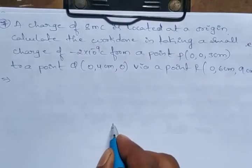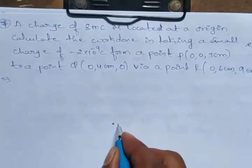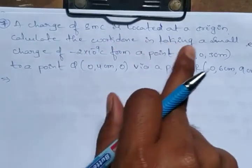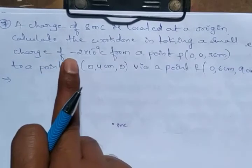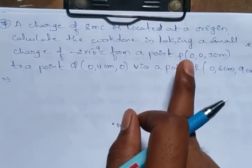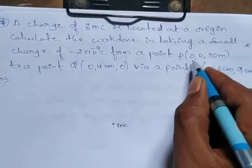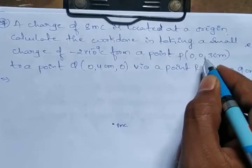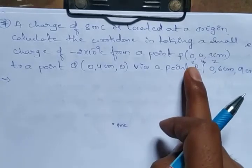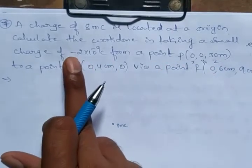Now calculate the work done in taking a small charge of minus 2 into 10 power minus 9 Coulombs from a point P at coordinates (0, 0, 3 centimeters). So observe the coordinate system: x, y, and z axes. The charge is located 3 centimeters along the z-axis.